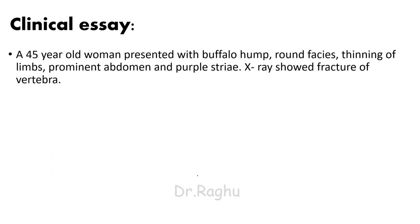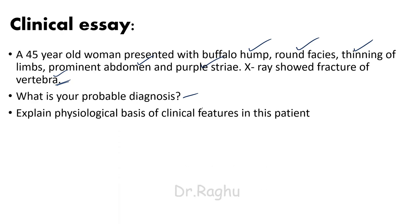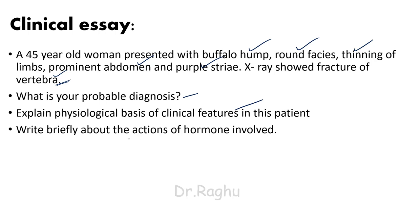So, for the 45-year-old woman presenting with buffalo hump, round face, thinning of limbs, protrusion of abdomen, purple striae, and vertebral fracture — we now know the physiological basis behind each of these features. The diagnosis is Cushing's syndrome. I can explain all the clinical features and the actions of the hormones involved. If this video was helpful, please like, subscribe to the channel, and share this video. Thank you.